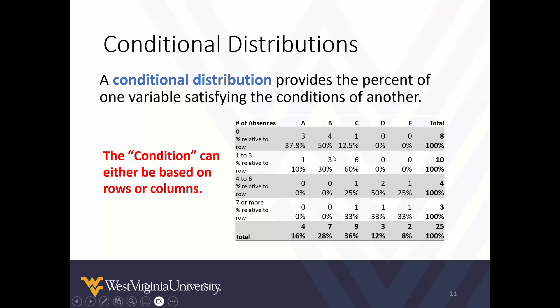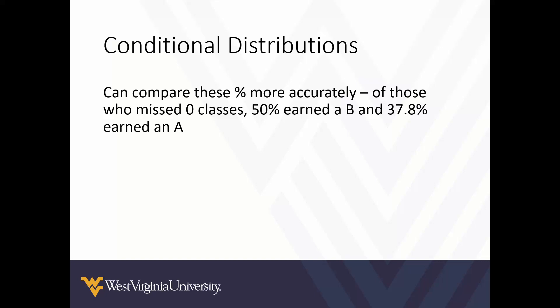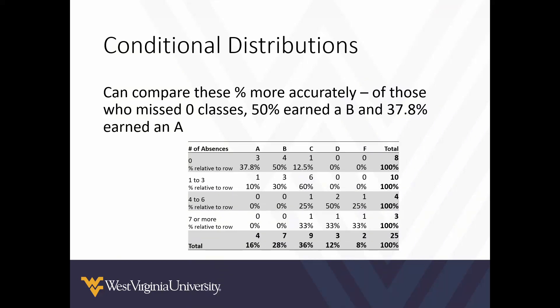We can apply this logic through the rest of the table. For those who had four to six absences, 25% earned a C, 50% earned a D, and 25% earned an F. We can compare percentages more accurately — of those who missed zero classes, 50% earned a B and 37.8% earned an A. This gives us a better idea of understanding patterns in our distribution based on our conditions.